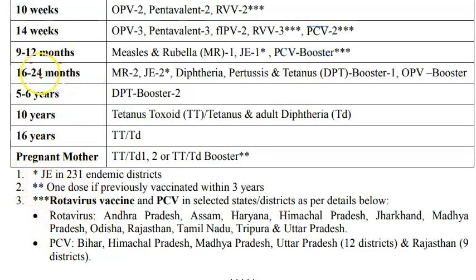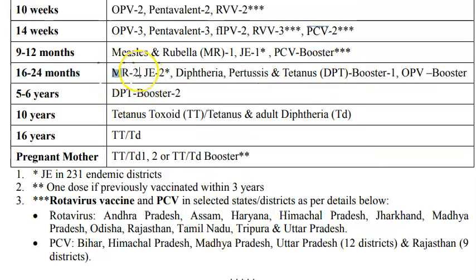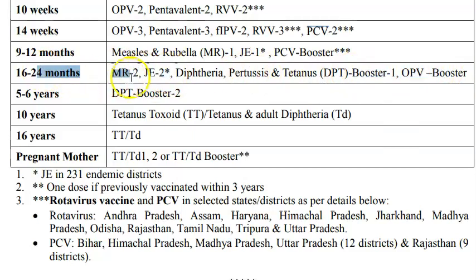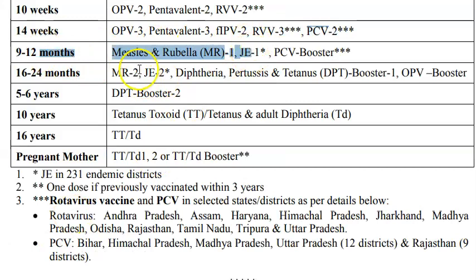From 16 months to 24 months (one year four months to two years), the second dose of MR is given, along with JE2 in endemic districts, a DPT booster, and an OPV booster. So the first dose of MR comes before one year, and the second dose within the second year.